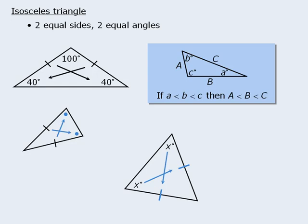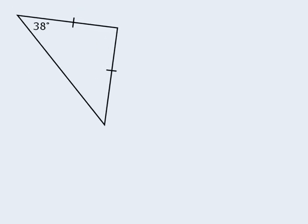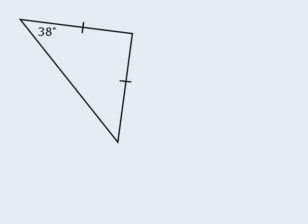One of the nice properties of isosceles triangles is that once you know one angle, you can always find the two remaining angles. Take this example. If we know one angle, what are the two remaining angles? Well, the two angles opposite the two equal sides must be equal, so this other angle must be 38 degrees. Now that we know two angles in this triangle, we can use the fact that all three angles must add to 180 degrees to determine that this last angle is 104 degrees.